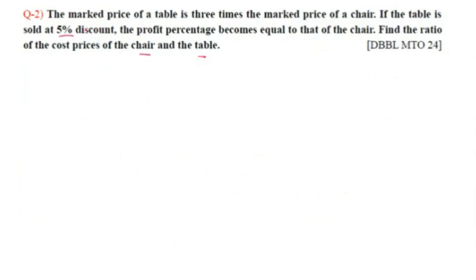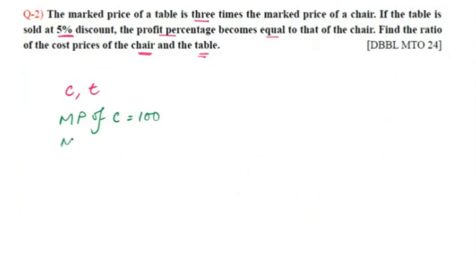The marked price of the table is three times the marked price of the chair. Let the cost price of the chair be C and the cost price of the table be T. Let the marked price of the chair (MP of C) equal 100, so the marked price of the table (MP of T) equals 300.